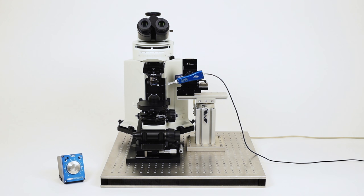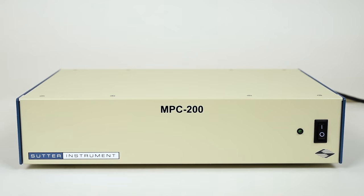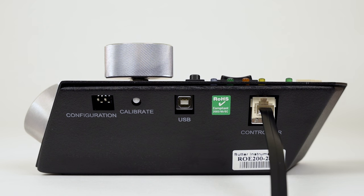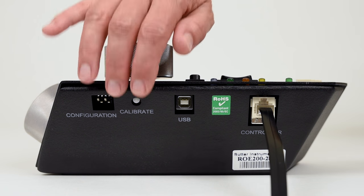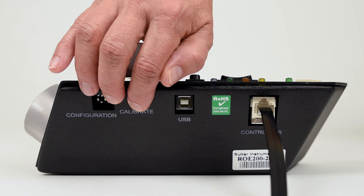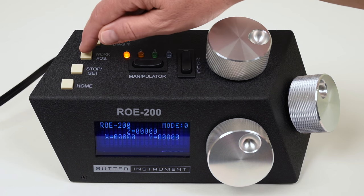To begin, position your manipulator in the center of travel on all three axes. On the MPC200, the factory set work position will be approximately in the center of travel. After connecting the manipulator to the controller, press calibrate, then press work position.